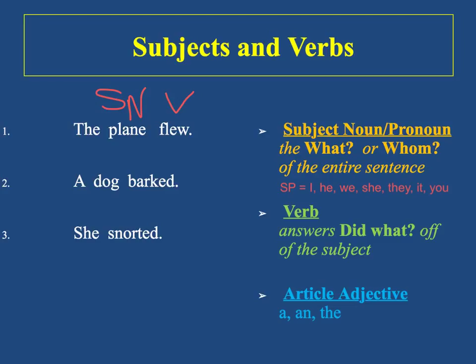The last word, the, is an article adjective. There are three of them: a, an, and the. There are no questions to ask for article adjectives — we just memorize the three, and any time we see one of them, we label it A for article adjective. The last thing that we do is find our subject and our verb and draw a line between them. This will help us out down the road when we're looking for complete subjects and complete predicates.